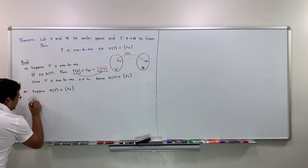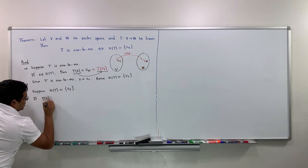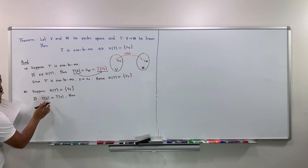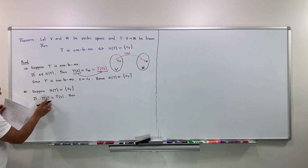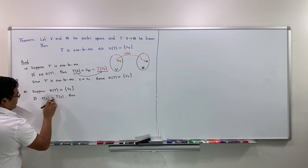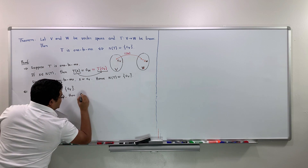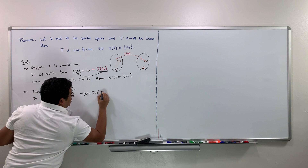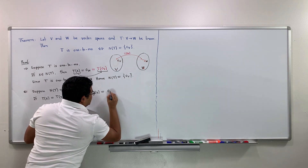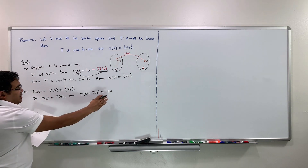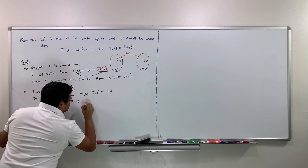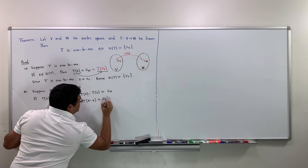If T(x) equals T(y), both being vectors in W, then their difference T(x) minus T(y) would be the zero vector in W. Since T is linear, we can write this as T(x minus y) equals the zero vector in W.